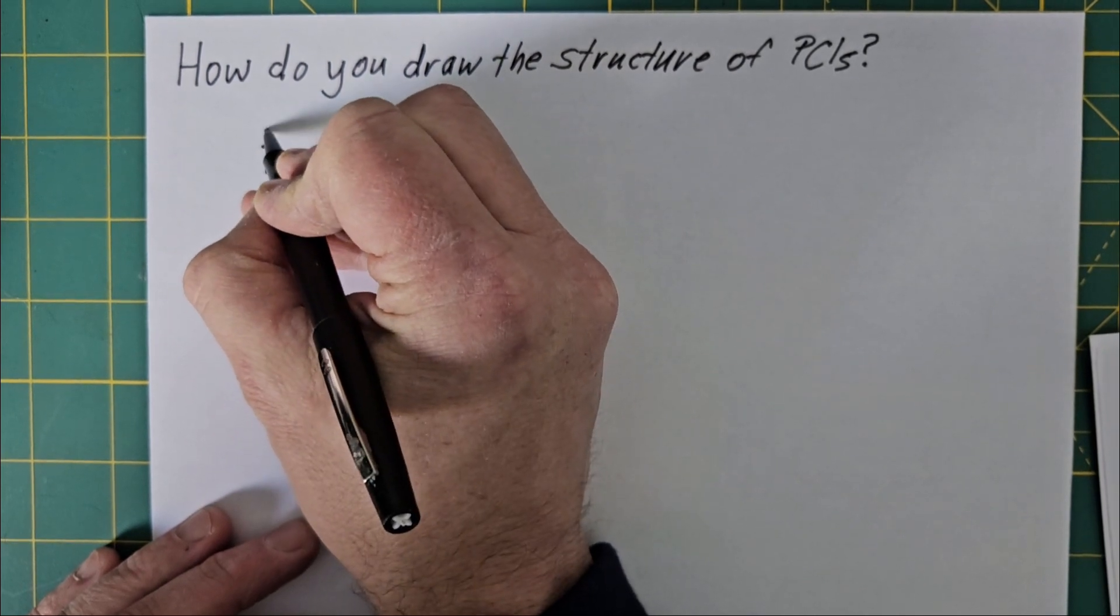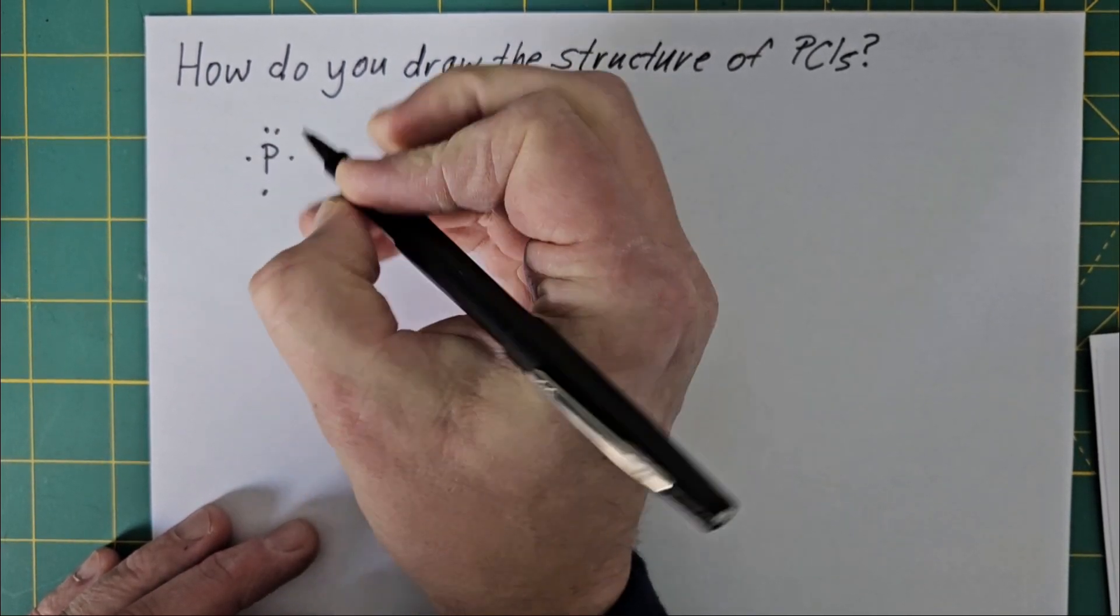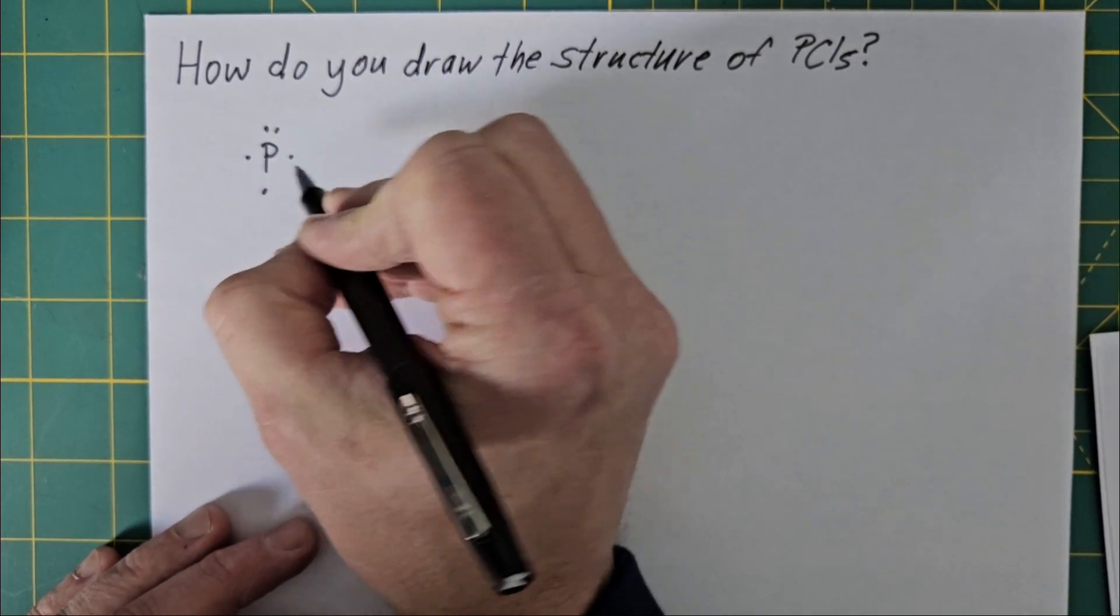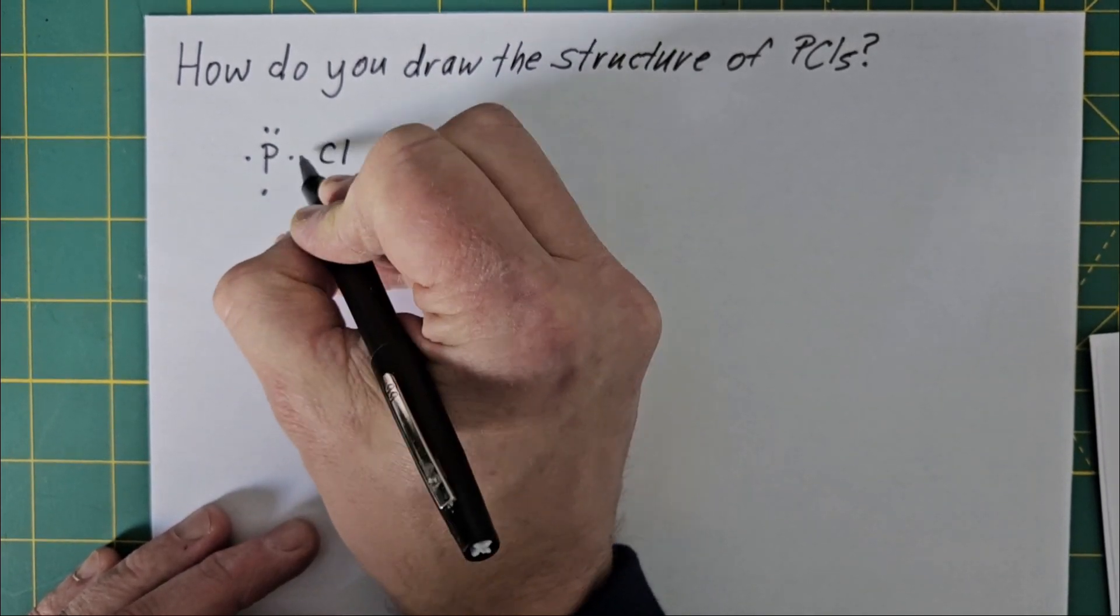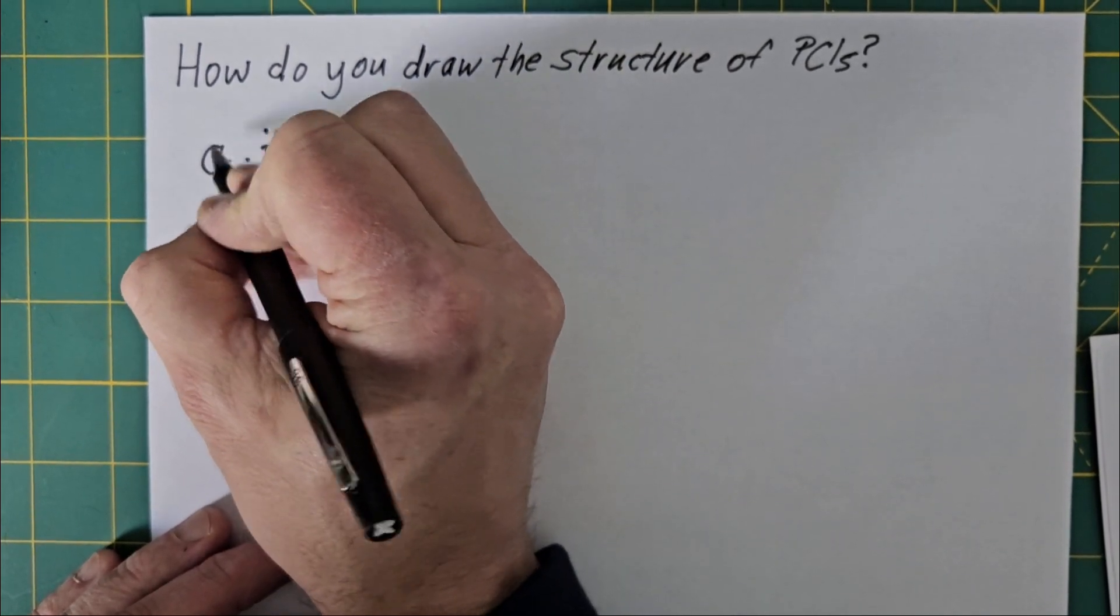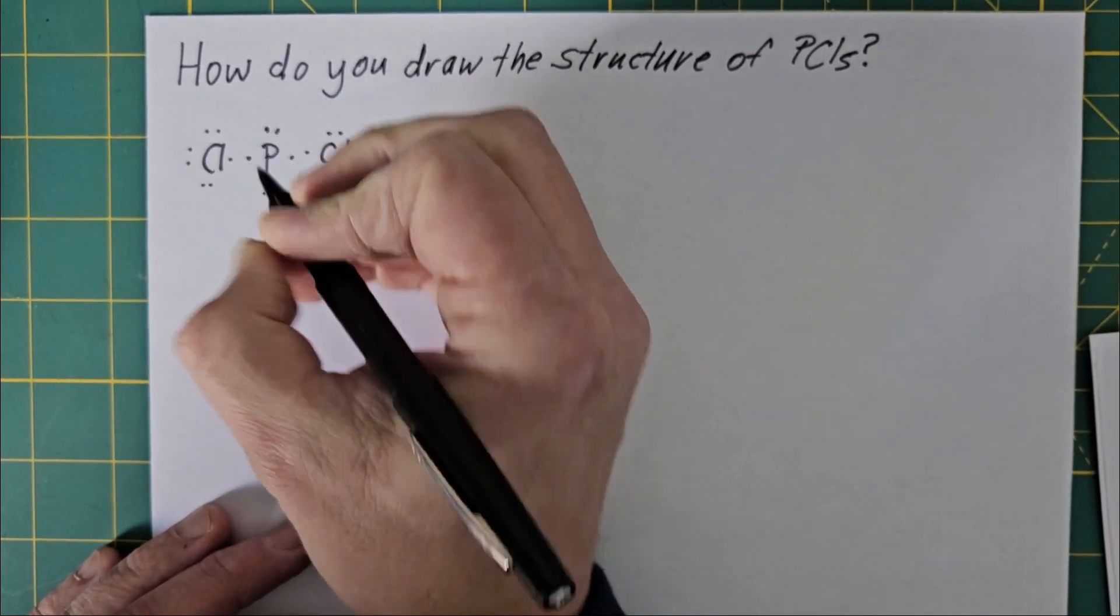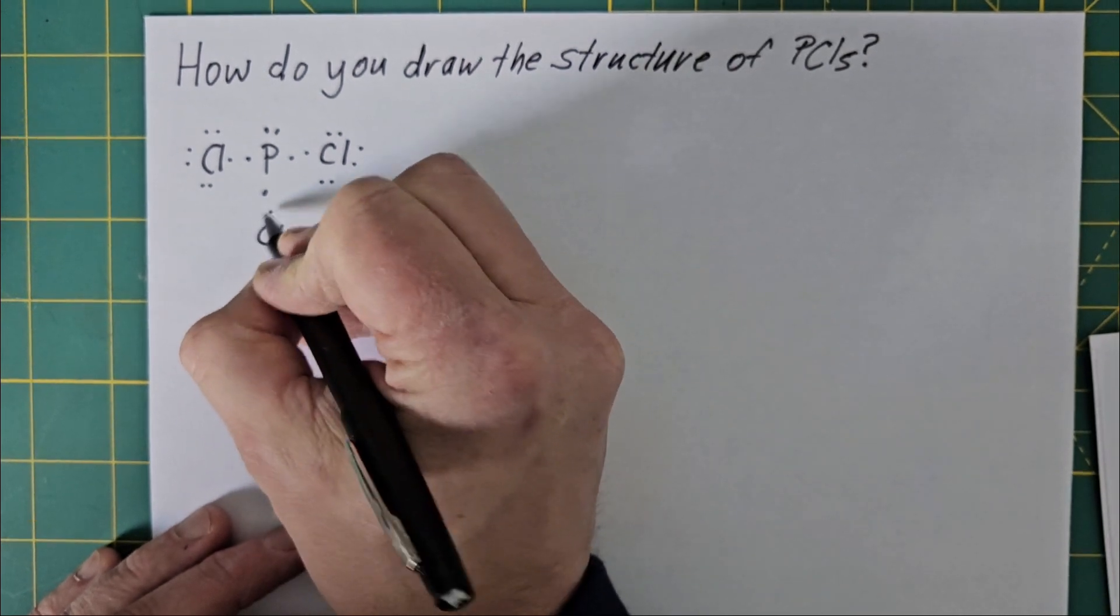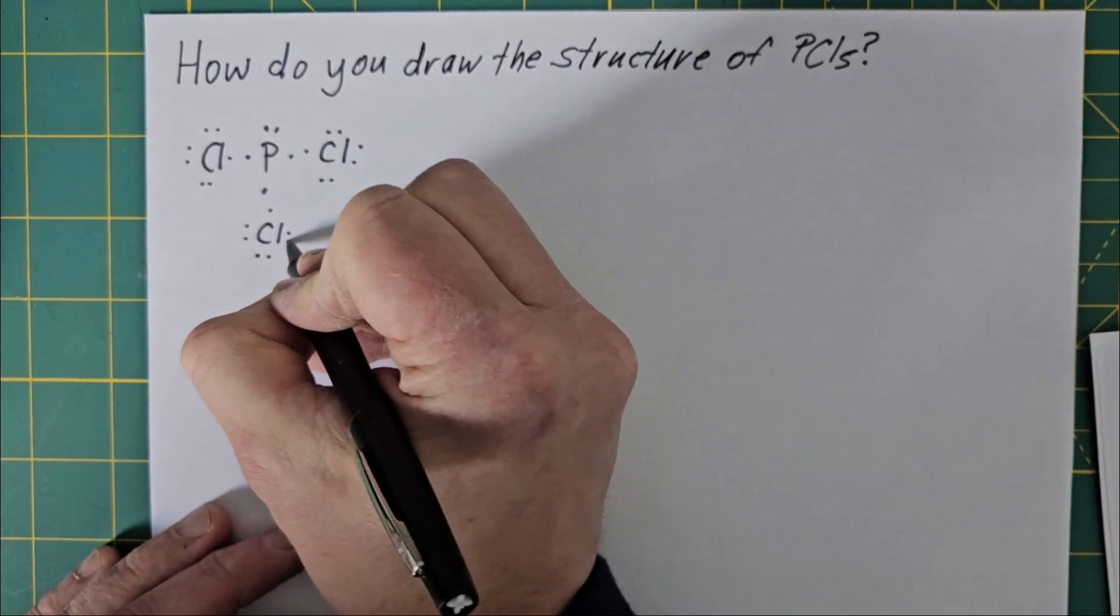As always, we're going to start with our Lewis dot structures. I'm doing the electron dot notation for all the atoms involved. Phosphorus has five valence electrons. Chlorines have seven.